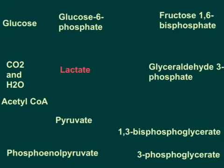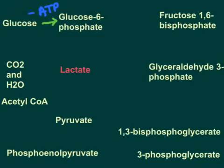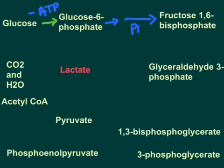Here I have written the reactions involved in glycolysis. Glucose is converted to glucose-6-phosphate by glucokinase or hexokinase, consuming one ATP. Glucose-6-phosphate is then converted to fructose-6-phosphate, and fructose-6-phosphate is converted into fructose-1,6-bisphosphate by the enzyme PFK1, consuming another ATP.